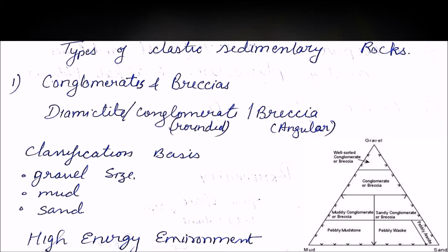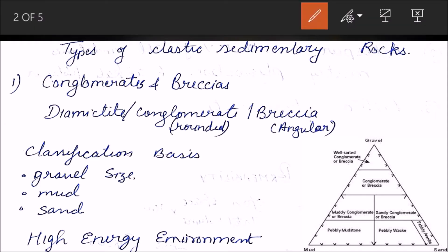Conglomerates and breccias - conglomerates are rounded, breccias are angular. Now the classifications are on the basis of gravel size, mud size, and sand. As you can see in this triangle here, gravel, mud, and sand are the three ends of this triangle.